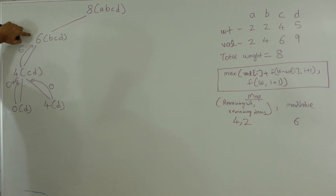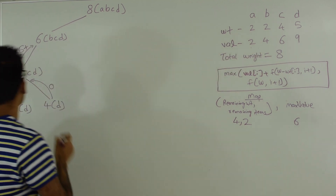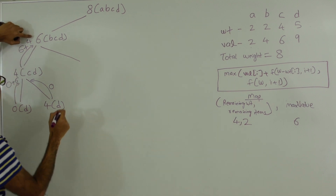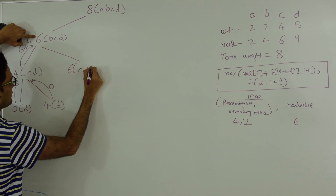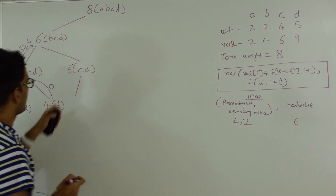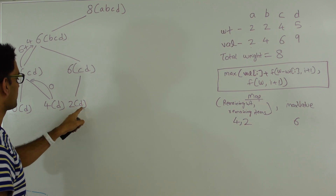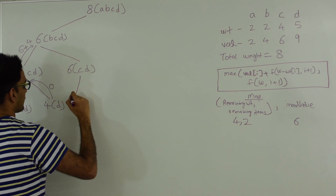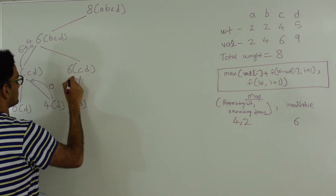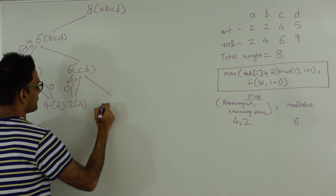Coming back up: if we picked B the best we can do is 6 plus the value of B which is 4, so the best we can do is 10 if we picked B. If we do not pick B we are left with the same weight 6 and items C and D. On the left side we pick C again. When we pick C we're left with 6 minus 4 = 2 weight and item D. The weight of D is 5 which is greater than 2, so D cannot be picked — we return 0 plus the value of C which is 6.